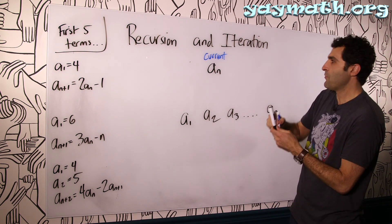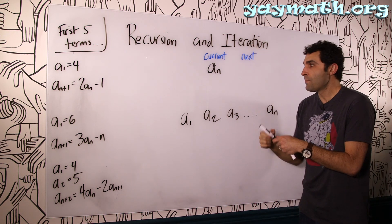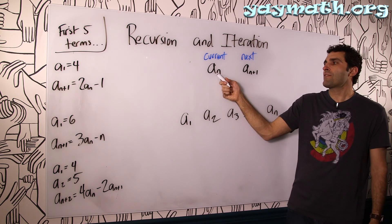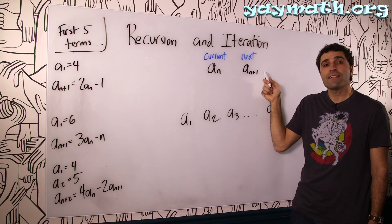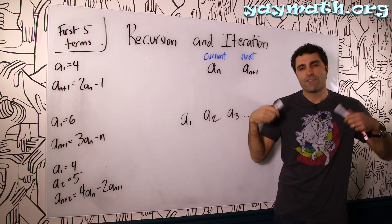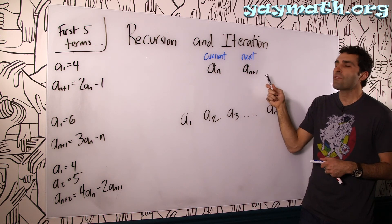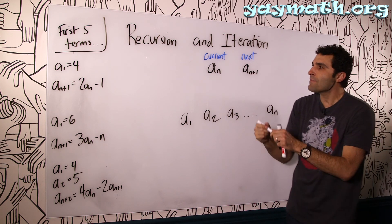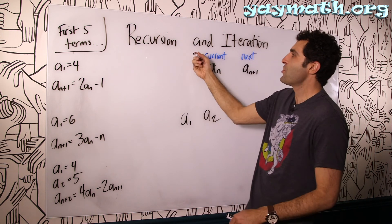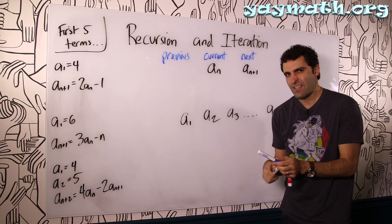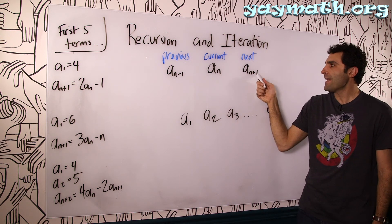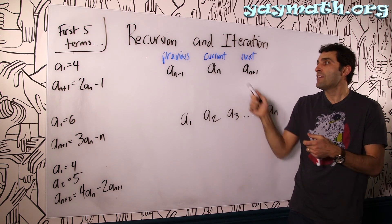It makes sense then that the next term would be one ahead of the current term — that is a_(n+1). So if the current term was a5, the next term would be a6, which is a_(n+1). From now on, when you see a_n, think 'current term,' and when you see a_(n+1), think 'next term.' And going the other way, a_(n-1) would be the previous term.